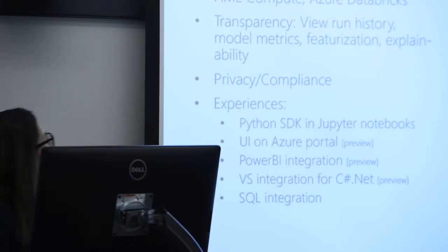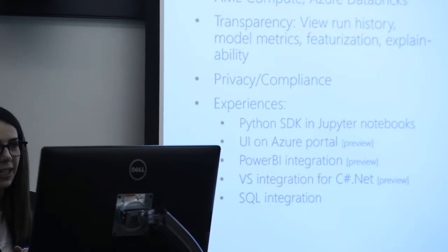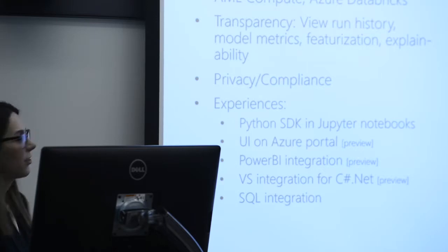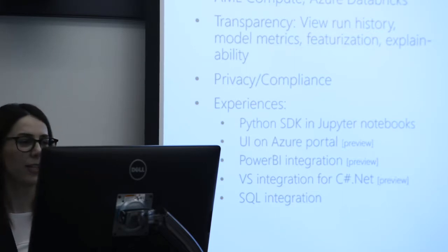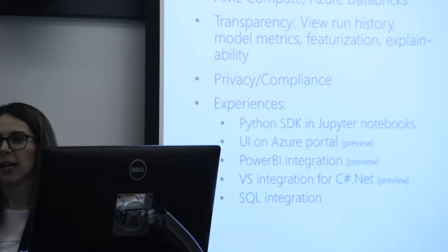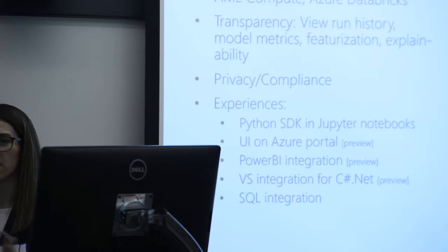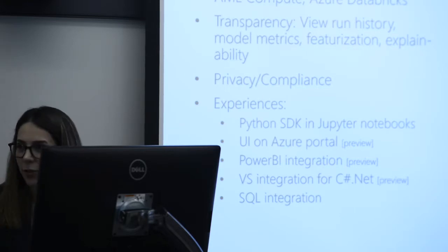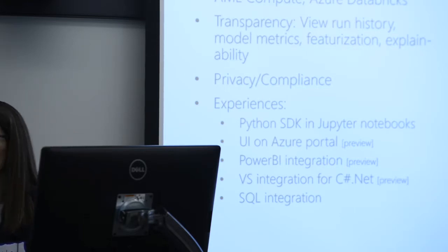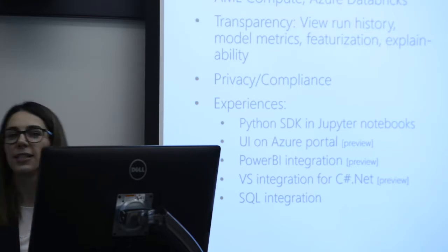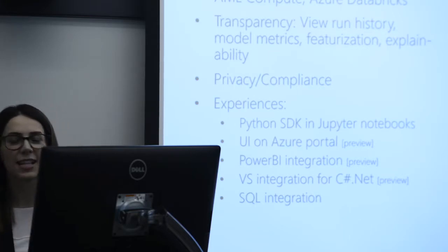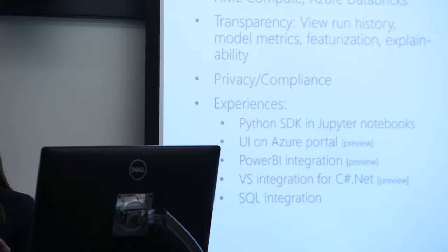Looking at the capabilities of automated machine learning: right now we support classification, regression, and forecasting scenarios. For compute options you can use a cluster of nodes and assign different jobs to them, or use automated machine learning inside Databricks. In terms of transparency, you can view all run history, track all experimentations, and it also gives you model explainability — the features that are important to your model.